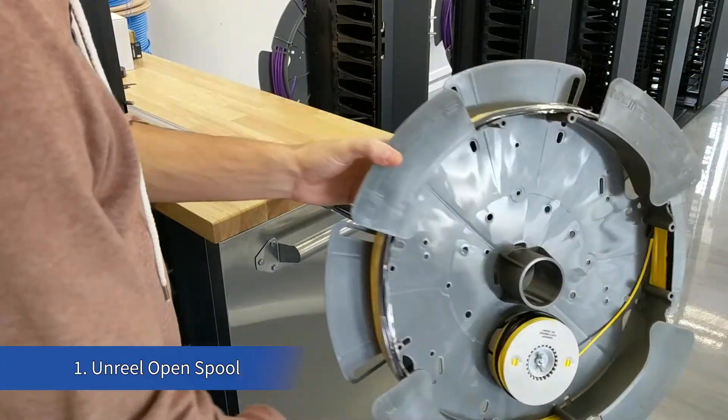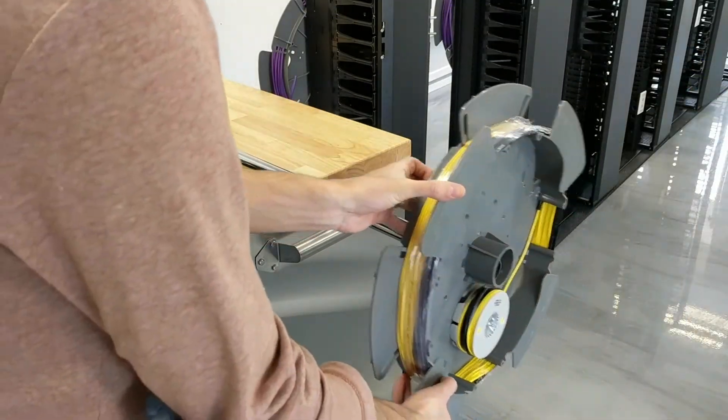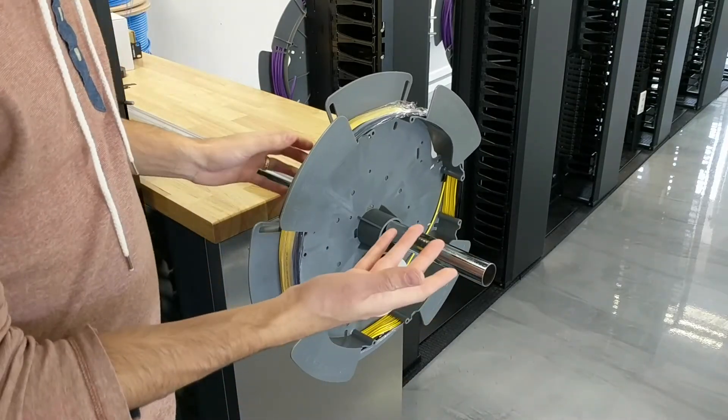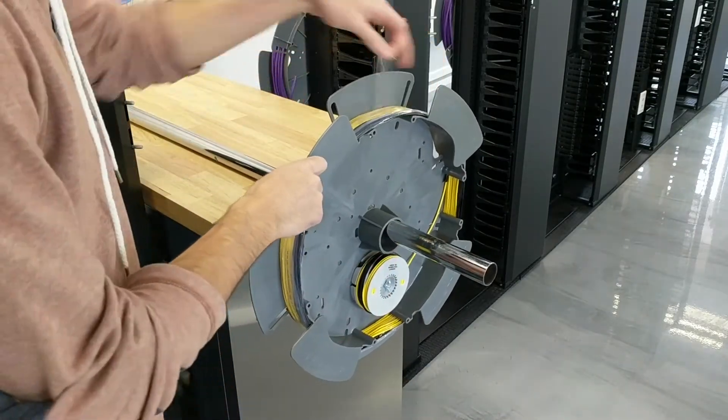First, mount the open spool on the derailer. Next, remove any protective covering.